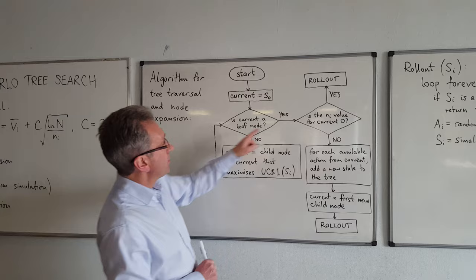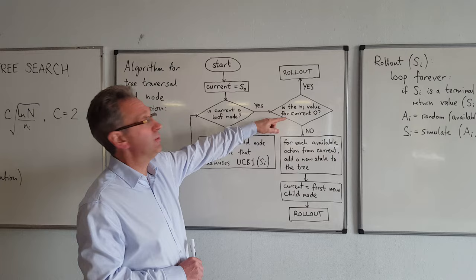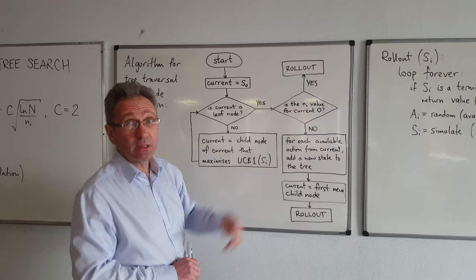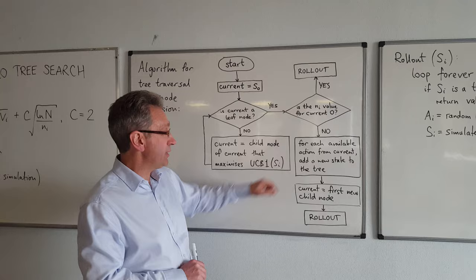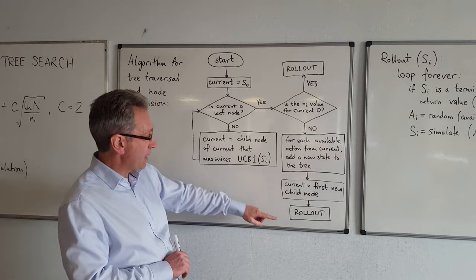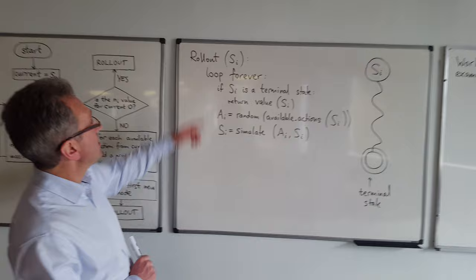Once at a leaf node, you ask how many times has it been sampled. If it's never been sampled before, you don't expand it — you simply do a rollout from there. However, if it has been sampled before, this is where you add new nodes into the tree. For each available action from the current state, you add a new state to the tree. Then you let current be the first of those new child nodes, and you do the rollout from this new child node.